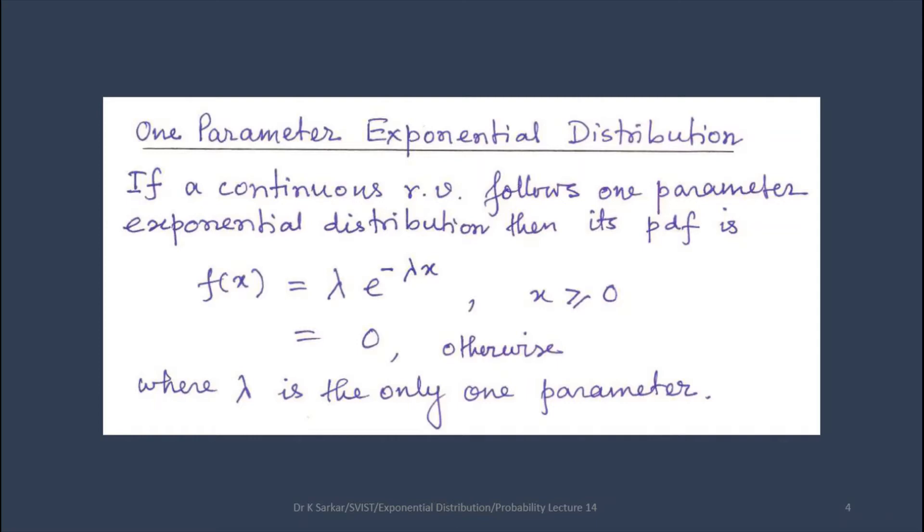One parameter exponential distribution: if a continuous random variable follows one parameter exponential distribution, then its PDF is f(x) equals lambda e power minus lambda x for x greater than or equal to 0, f(x) equals 0 otherwise, where lambda is the only parameter.